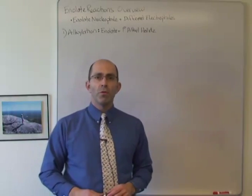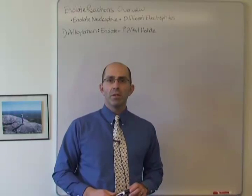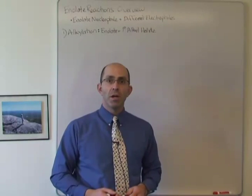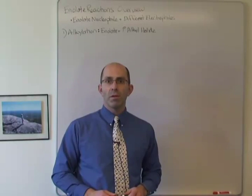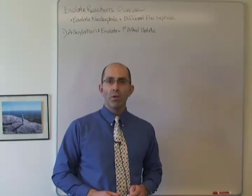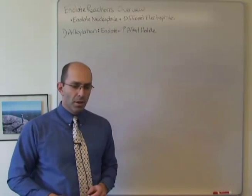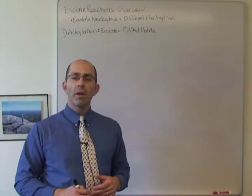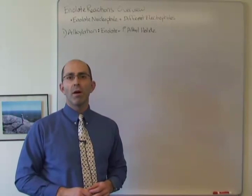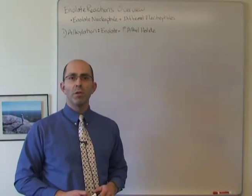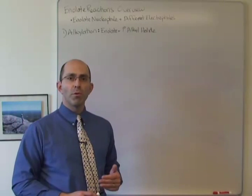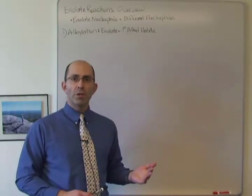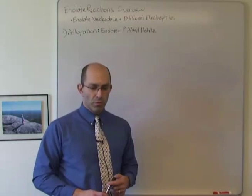Hello, today I want to talk about an overview of enolate reactions. We've spent a decent amount of time over the last couple of weeks talking about these types of reactions, and I wanted to summarize some of the key points for enolate alkylation, aldol, and Claisen reactions. When we're thinking about enolate reactions, the enolate is always going to be the nucleophile and the reactions vary depending on what electrophile we use. I want to go through three types of electrophiles, look at the reaction outcome, and go over the mechanism for each reaction.